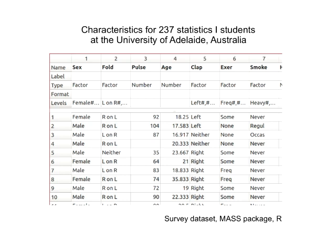The fourth variable is age — the first person is 18.25 years. They collected information about how long it's been since their last birthday and translated the months into years. Then clap: whether you clap with your left hand on top, right hand on top, or neither. Next is exercise — whether you do it frequently, some, or none. And then smoking — never, occasionally, regularly, or heavy, which doesn't occur for any of the first ten people.